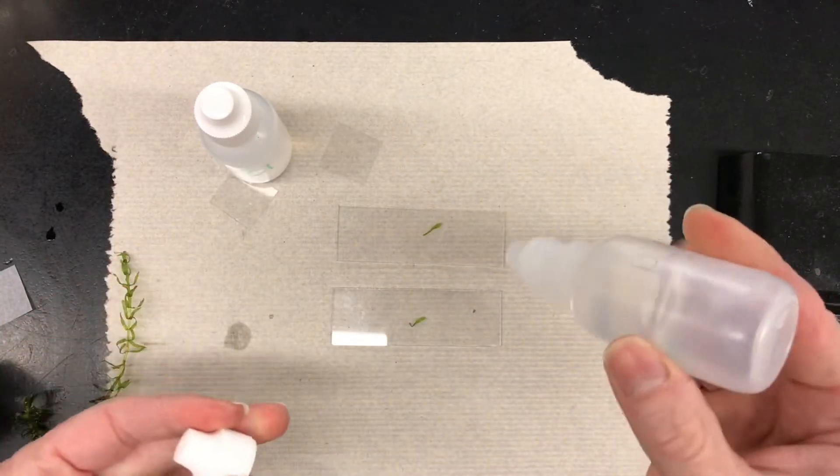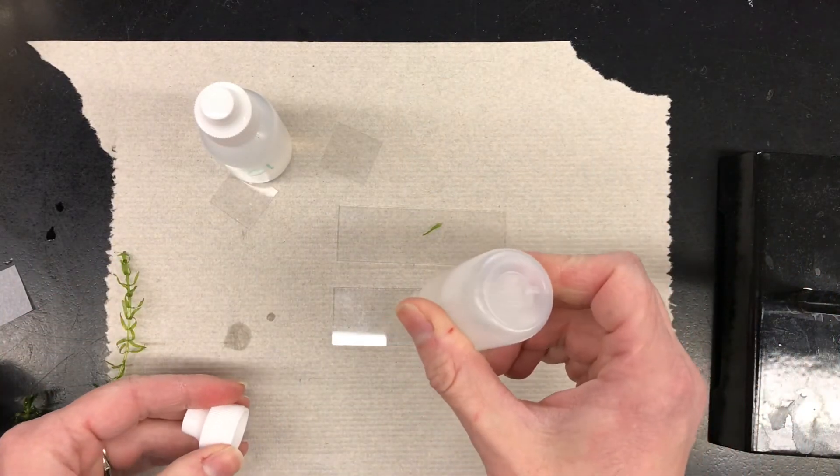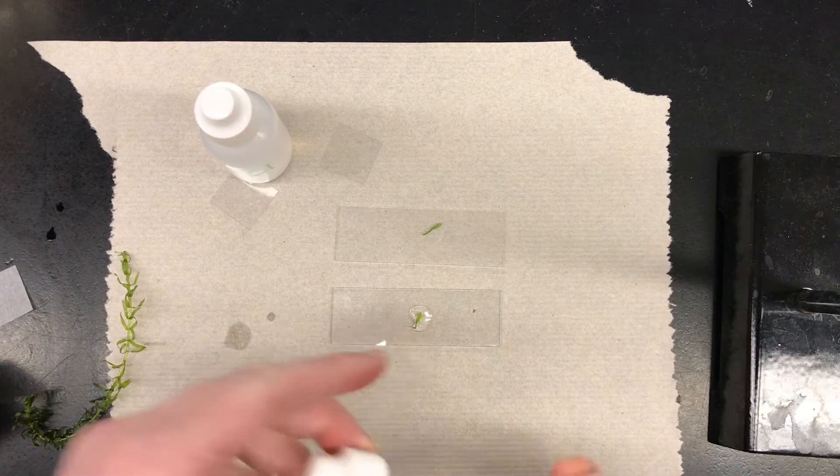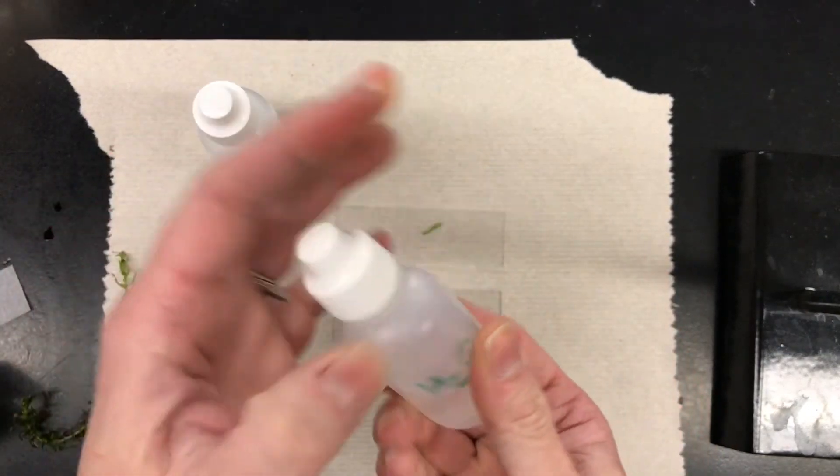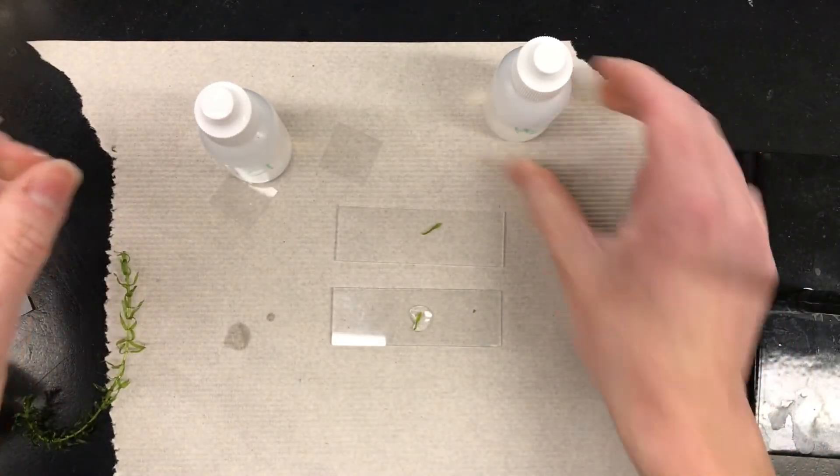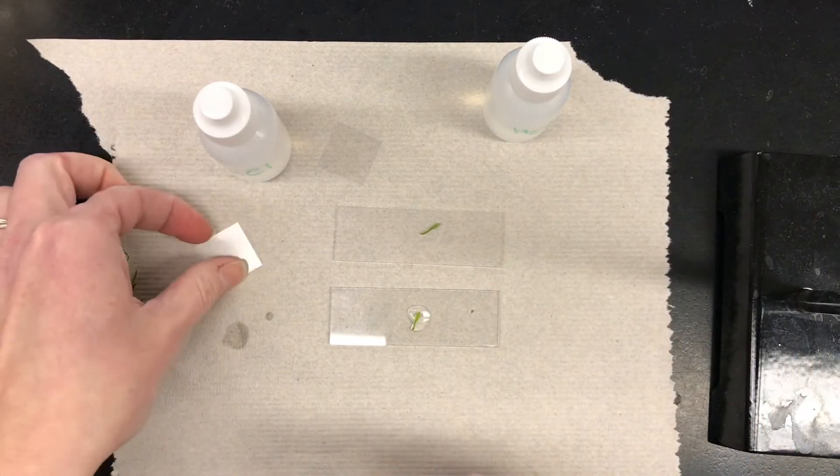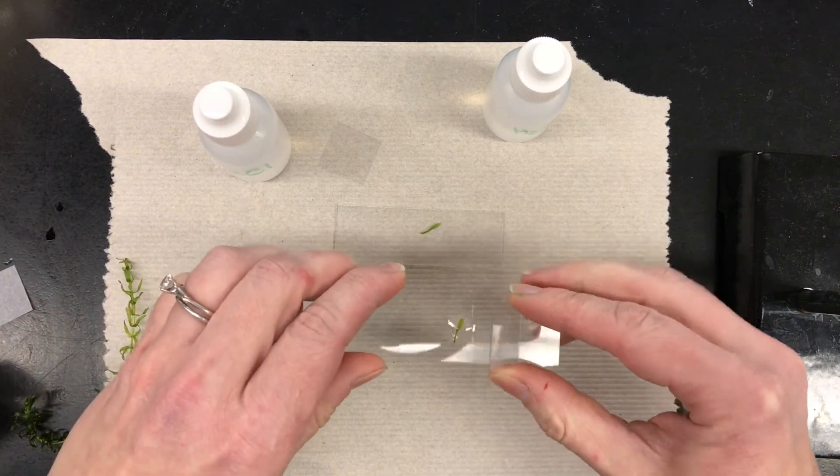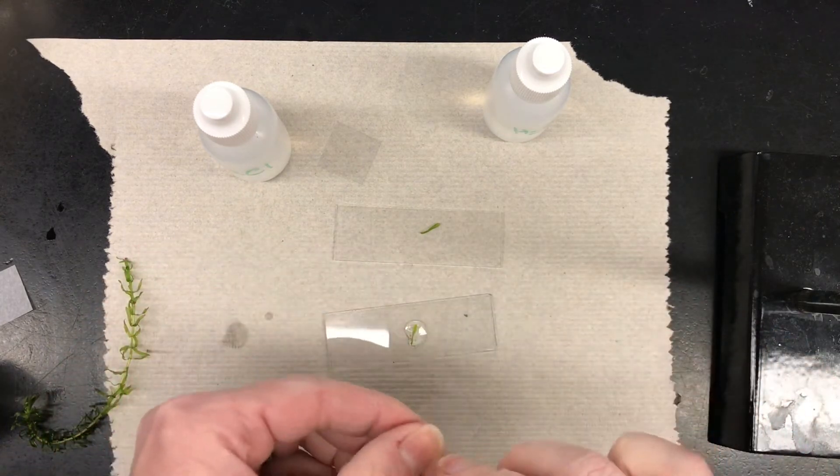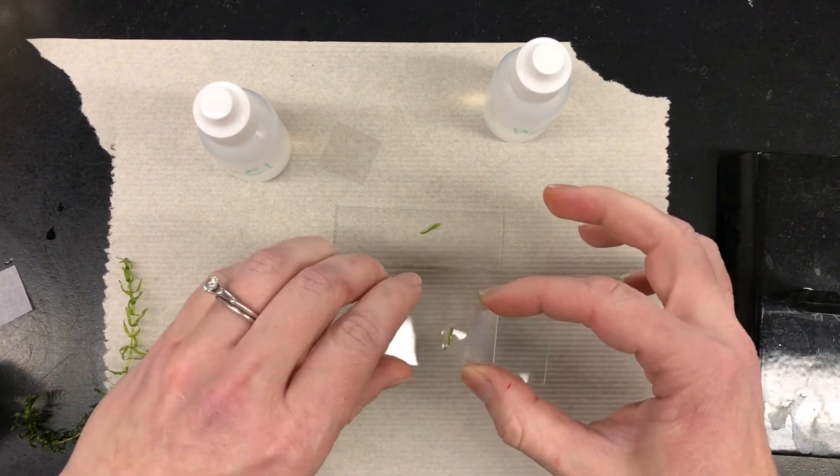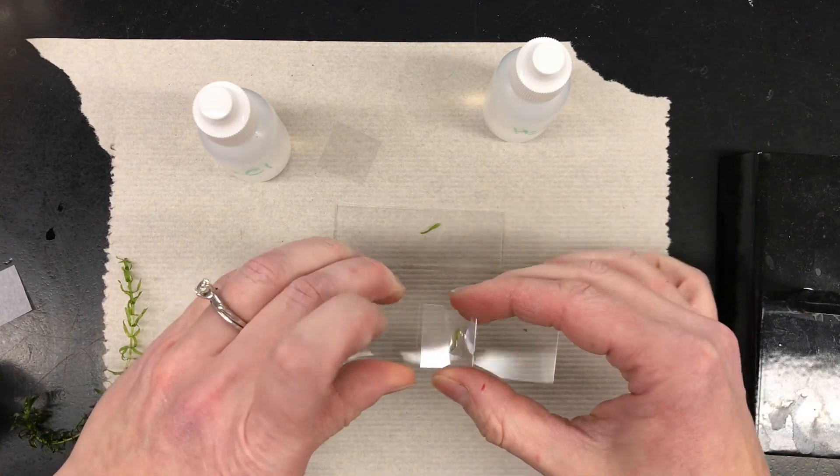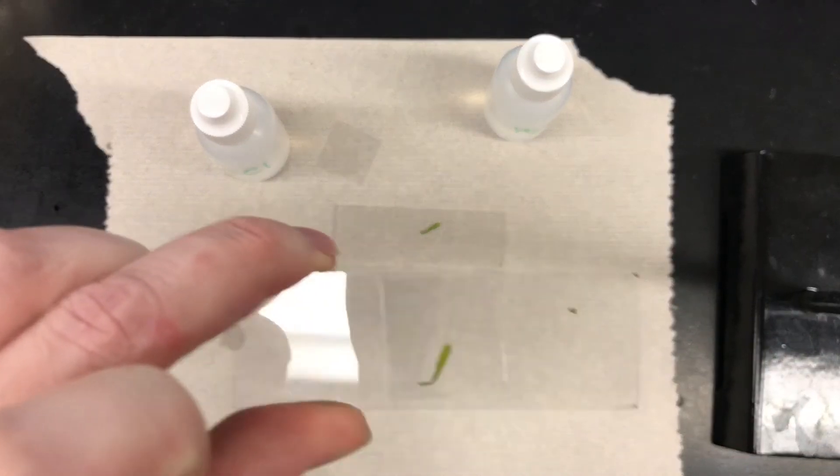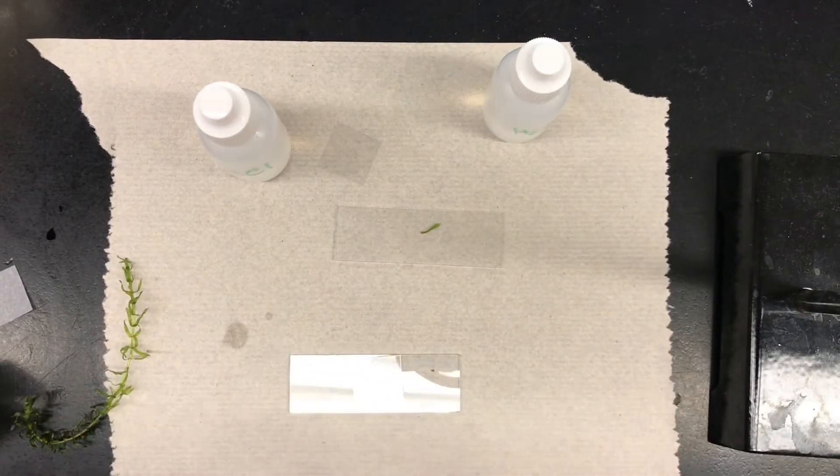Take your water, hold it above the slide vertically, and you're going to place one drop of water right on top of your Elodea. Then we put the cap back on to our dropper. Take your cover slip, hold it at a 45 degree angle, touch the water a little bit, lower it down, and drop it. So that's our regular water slide.